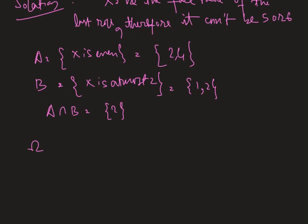Therefore, we have a sample space which is 1, 2, 4, and our favorable event is 2. Therefore, the probability of A intersection B is 1 by 3.